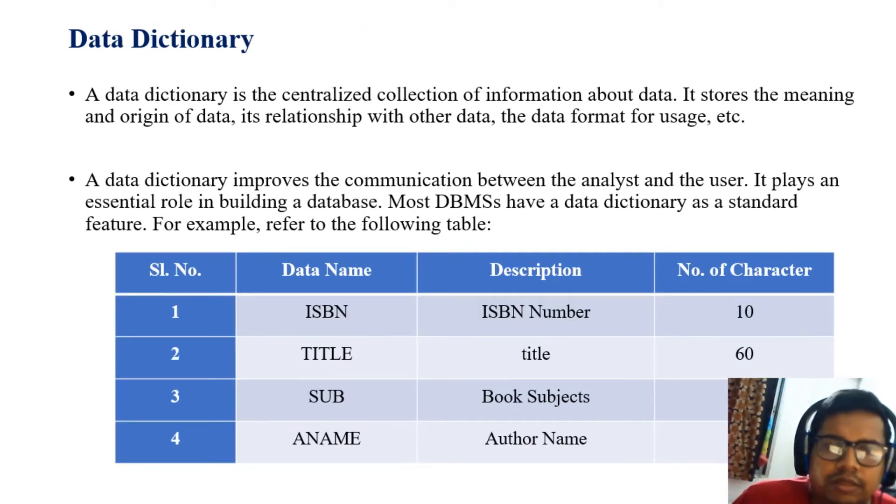A data dictionary is a centralized collection of information about data. It stores the meaning and origin of the data, its relationship with other data, and data format for usage. Data dictionary improves the communication between the analyst and user. It plays an essential role in building a database. Most database management systems have a data dictionary as a standard feature.